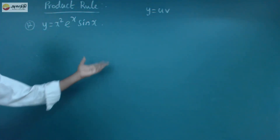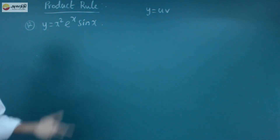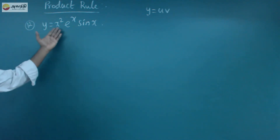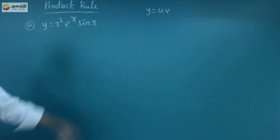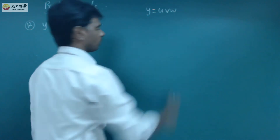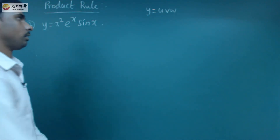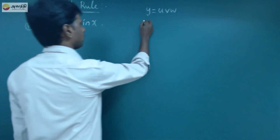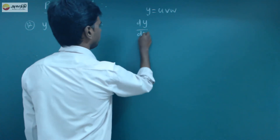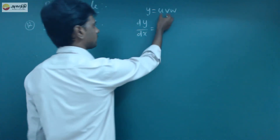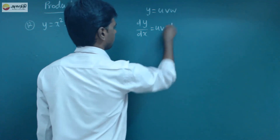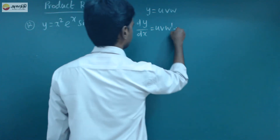u has differentiations v, and v is equal to u with three functions — uv is equal to w. The last concept: dy by dx is equal to the product rule applied across u, v, and w.